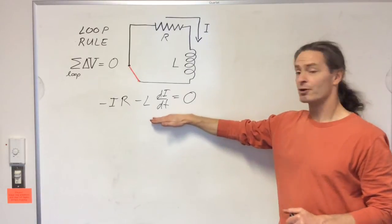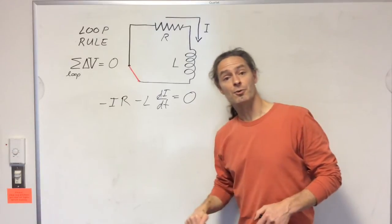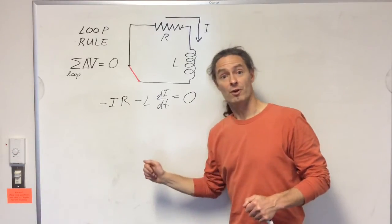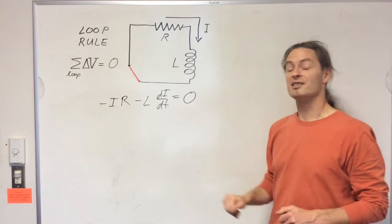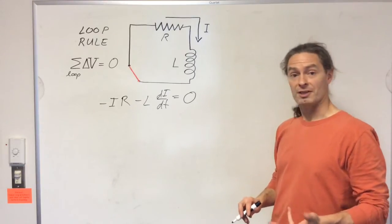So now we have a first-order differential equation in the variable i. The trick to solving this equation is to get all the i stuff on one side of the equation and get dt on the other, and then we've got something we can integrate. So let's do that.